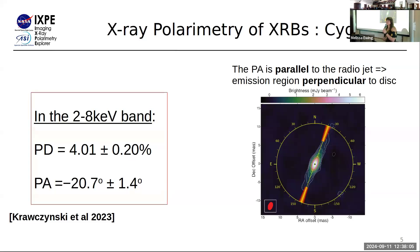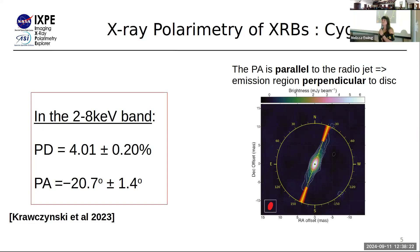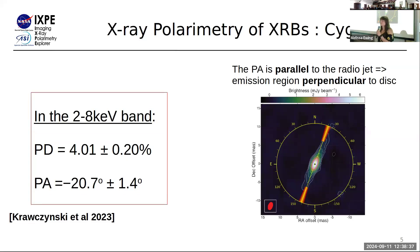We've already been using IXPE to do some great work with X-ray binaries. These are results from the observation of Cygnus X-1, a persistent X-ray binary always observed in the hard state. We measure the polarization degree to be about 4% and the polarization angle to be about minus 20 degrees. We also find that the polarization angle is aligned with the radio jet, which means the emission region — the corona — is perpendicular to that angle and therefore aligned with the disk. So IXPE is already helping us break degeneracies in these models.